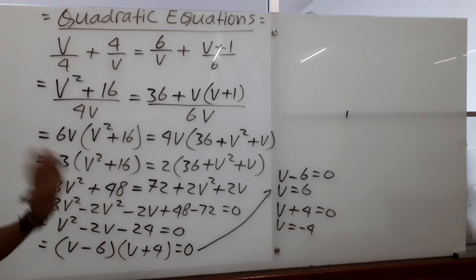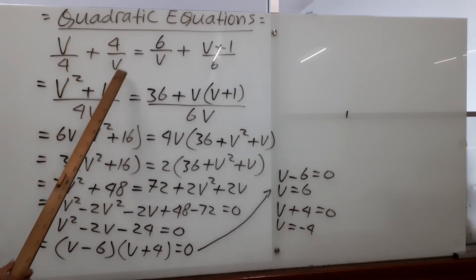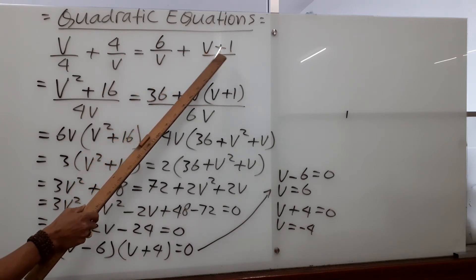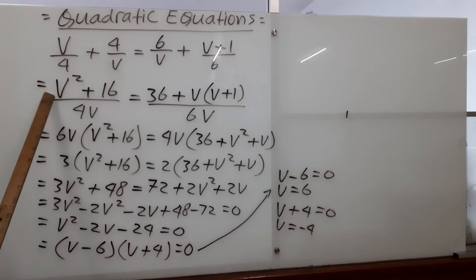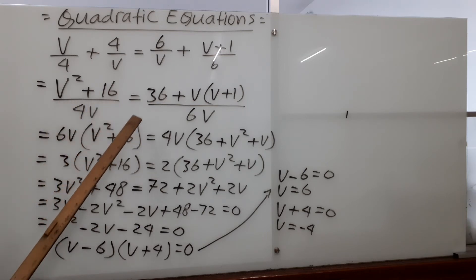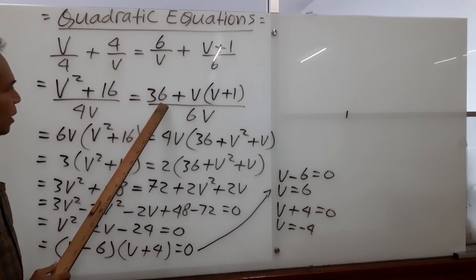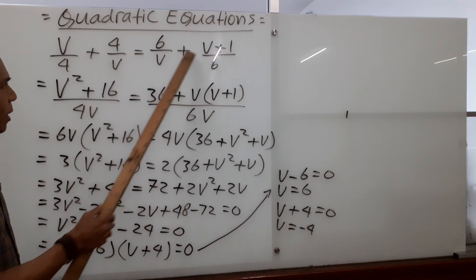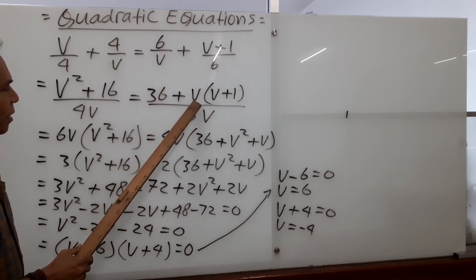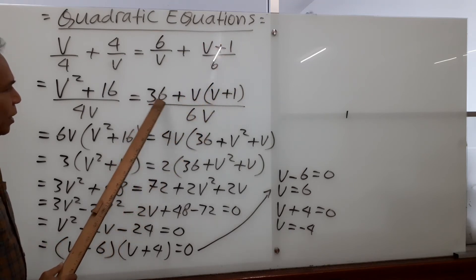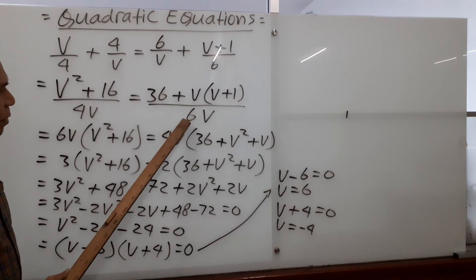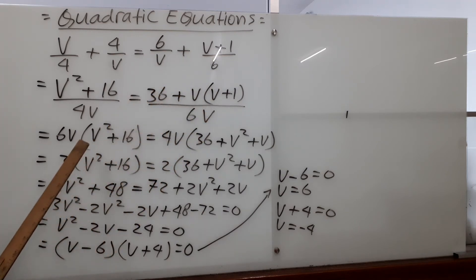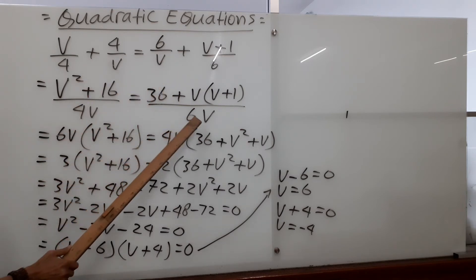Let's go through this one more time. The equation is v over 4 plus 4 over v equals 6 over v plus v plus 1 over 6. To solve this quadratic question, we cross multiply: v with v gives v squared, 4 over 4 gives 16, and 4v is the denominator. For the next part, 6 with 6 gives 36, and instead of multiplying directly we put v plus 1 in a bracket, giving 36 plus v open bracket v plus 1 over 6v.